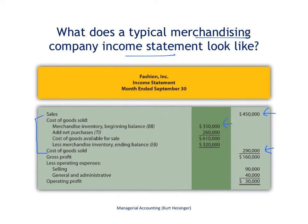The beginning merchandise inventory is an asset account and here it is $350,000. We then add to that any purchases made during the month — inventory purchased from outside companies — and that number is $260,000. That gives us the cost of goods available for sale of $610,000. From there we either sell the goods or retain them in ending inventory. Our ending inventory balance was $320,000. Subtracting $320,000 from $610,000 gives us our cost of goods sold of $290,000.